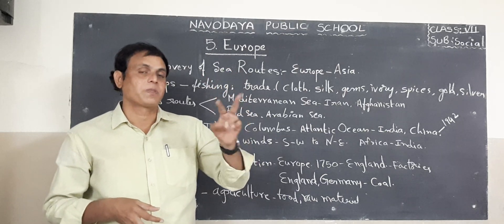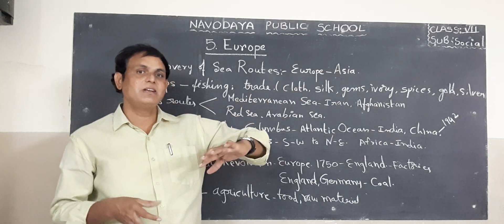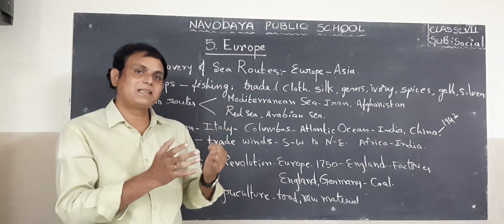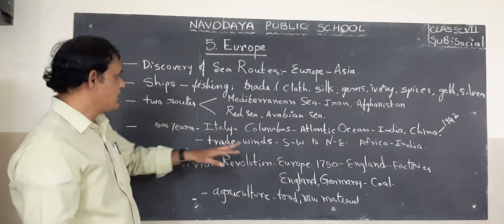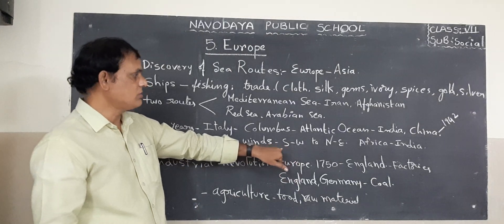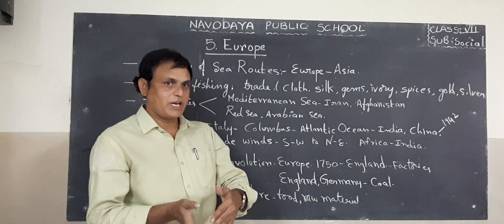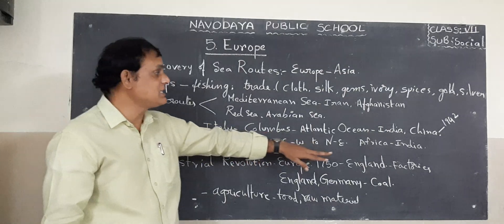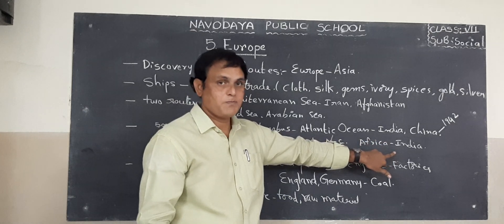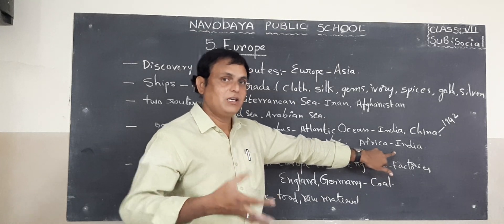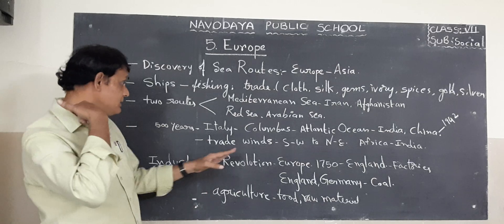What are the two winds? Westerlies is one wind, and Trade Winds is the second. These trade winds helped European sailors to reach almost all lands of the world. Trade winds flow from South to West and also North to East across the Atlantic Ocean and beyond.